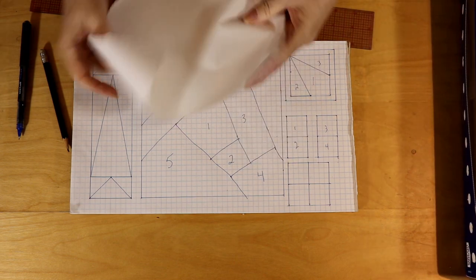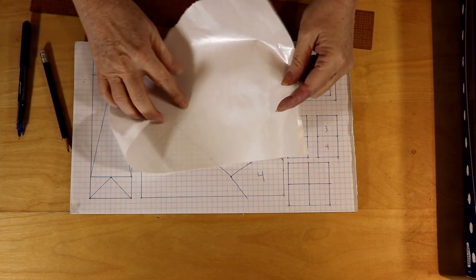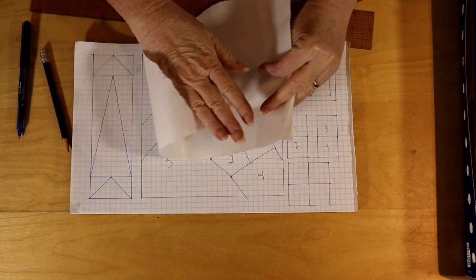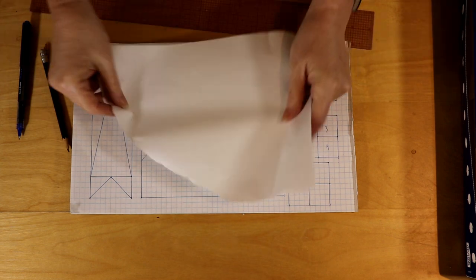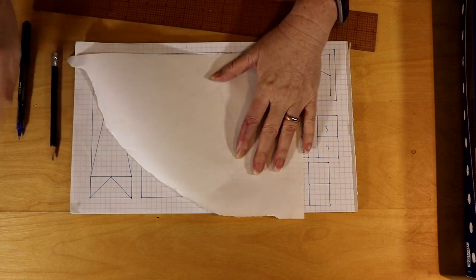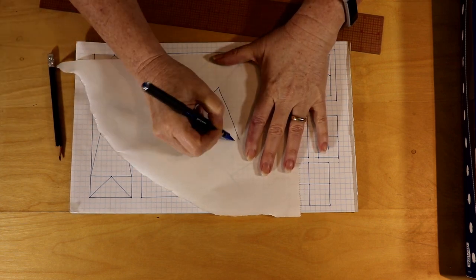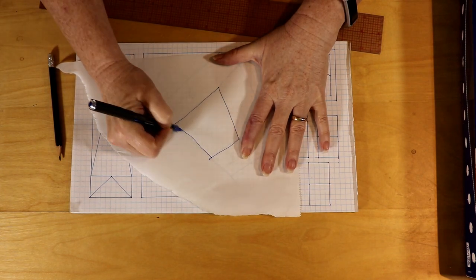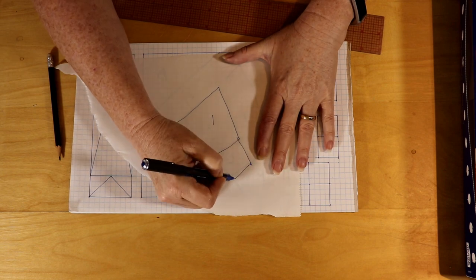There's a shiny side to freezer paper - that's the side you want to iron to, that's the side you want your fabric to be ironed to. And there's a dull side, a papery side. And this is where you would start drawing your number one. You just trace it, you can just trace what you had done. One and then two would be here.